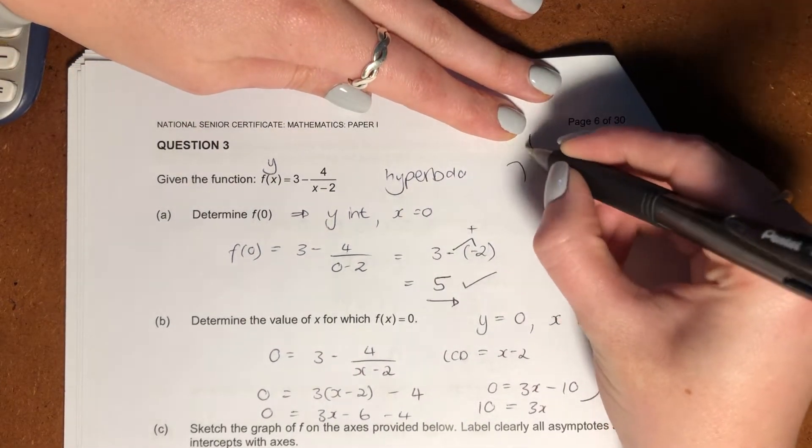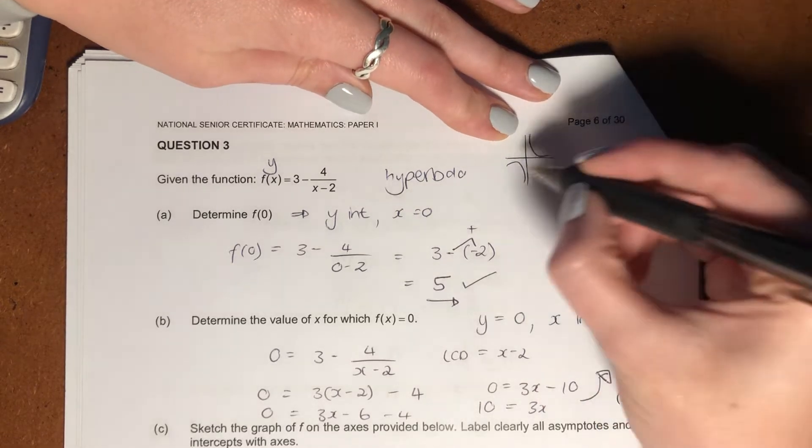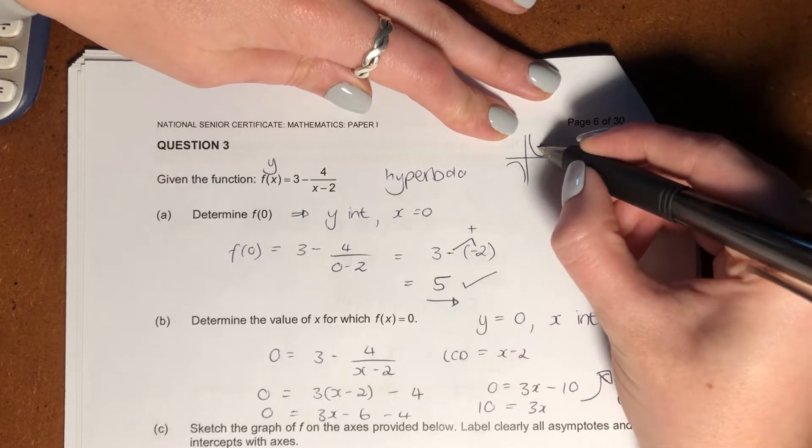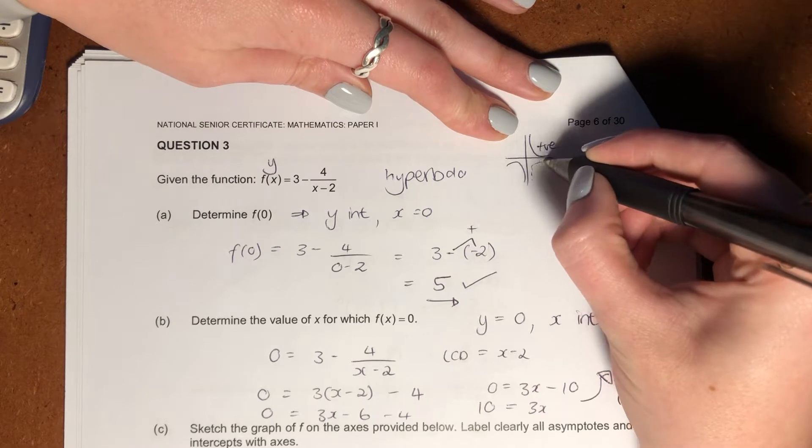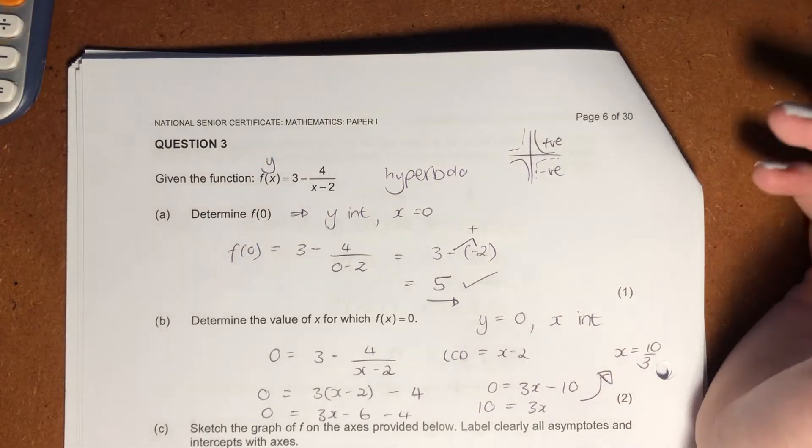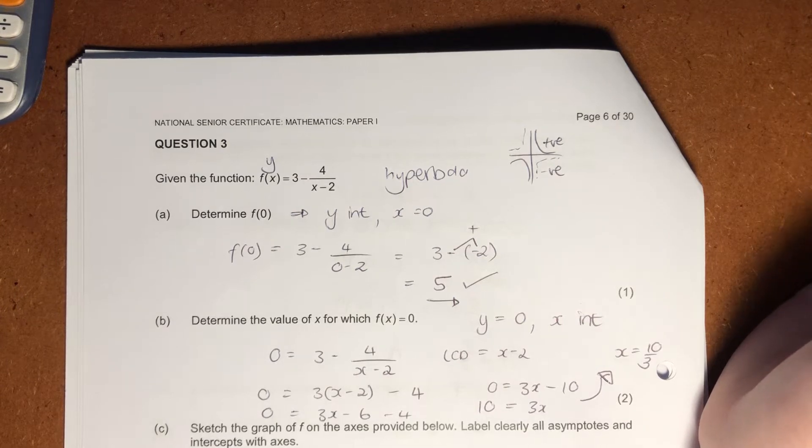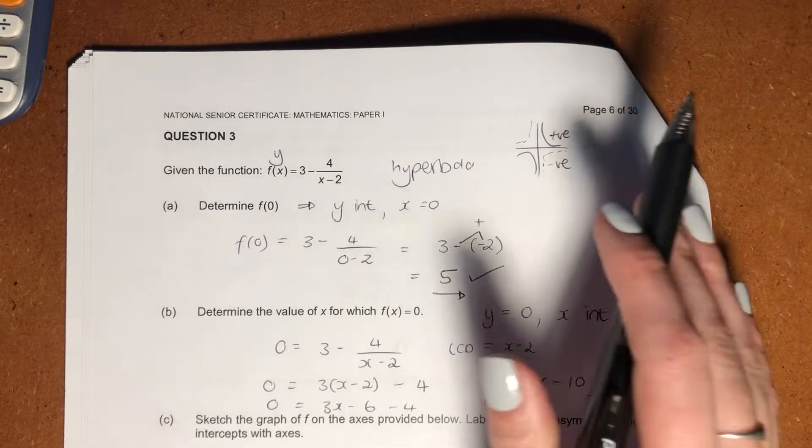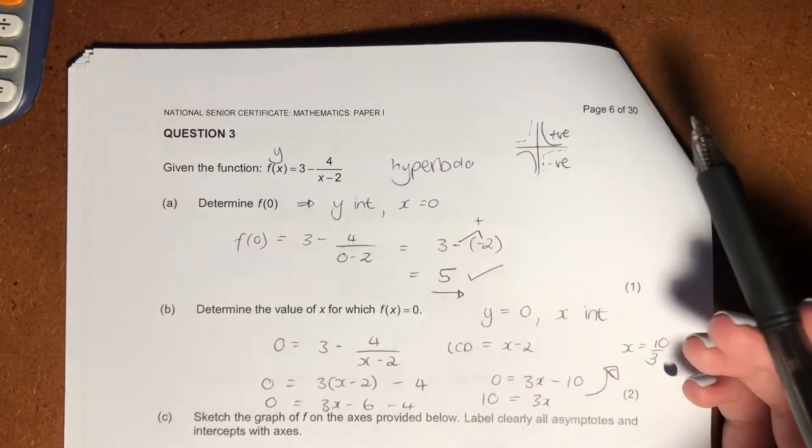Hyperbolas generally look, if it's a positive hyperbola, like that, where you have the two graphs. That's if it's a positive hyperbola. Negative hyperbola would look like that. So you can go plot these things on GeoGebra or any sort of graphing software, but this is what a hyperbola is.